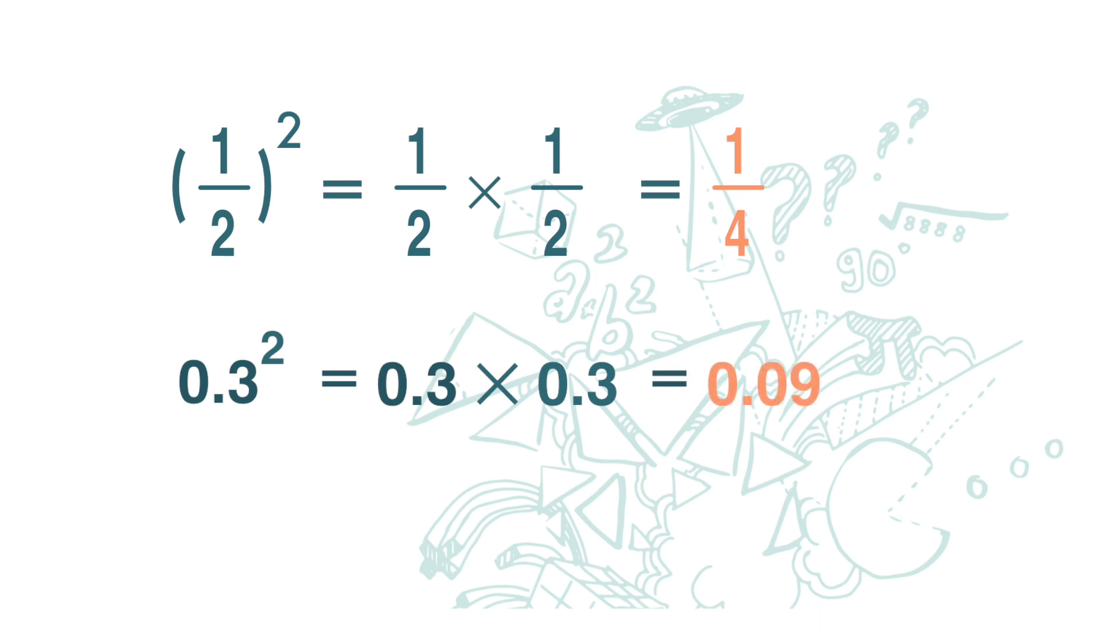Again notice that 0.09 is smaller than 0.3. So when we square a number smaller than 1, the resulting number gets even smaller.